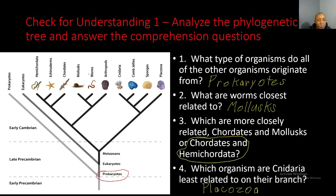Number two: what are worms most closely related to? Here are worms right here, and as we move up the phylogenetic tree they branch off over here. Notice this branch doesn't include arthropods — there's only one other type of organism on this branch with worms, and that's going to be mollusks.